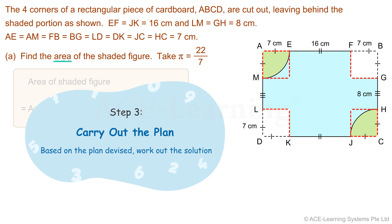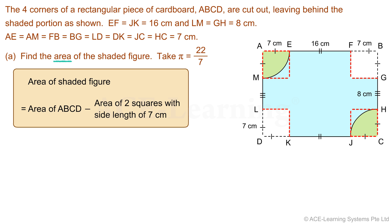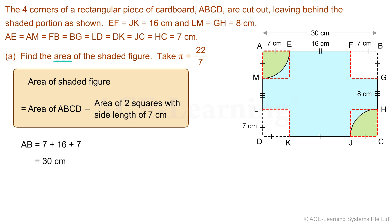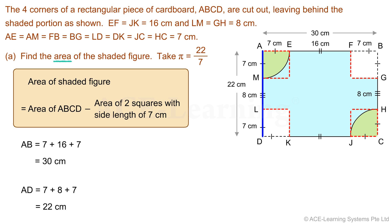Step 3: Carry out the plan. Based on the plan devised, work out the solution. We have the dimensions of the squares to find their areas, but not the dimensions of rectangle ABCD. The length of rectangle ABCD is 7 cm plus 16 cm plus 7 cm, so AB equals 7 plus 16 plus 7, which equals 30 cm. The breadth of rectangle ABCD is 7 cm plus 8 cm plus 7 cm, so AD equals 7 plus 8 plus 7, which equals 22 cm.